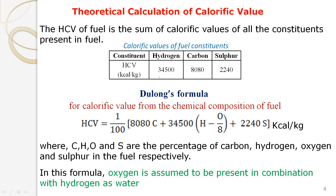For your information, hydrogen produces about 34,500 kilocalories per kg, whereas carbon produces 8,080 kilocalories per kg, and sulfur produces a higher calorific value of 2,240 kilocalories per kg. Using these values, we can write Dulong's formula as: HCV = (1/100) × [8,080C + 34,500(H − O/8) + 2,240S] kilocalories per kg.